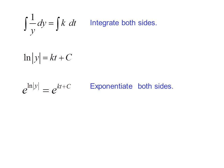To get rid of the natural log, we exponentiate both sides, giving us e to the ln absolute value of y equals e to the kt plus c.